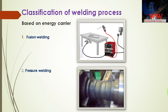Now let's understand how welding processes can be classified. Generally we classify welding based on energy carrier as fusion welding processes — such as TIG and SAW — and pressure welding processes — such as ultrasonic welding and friction welding.